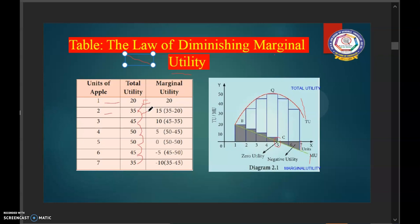But, the utility from the second apple will be less than that of the first apple. So, for example, the utility is 35 here. Here, the utility which he got in the first apple was 20. So, 35 minus 20 is 15. So, for the first apple, the utility was 20. For the second apple, it was 15. So, while he was taking third apple, it was 45. Again, 45 minus 35. His utility decreases into 10.